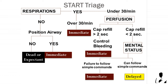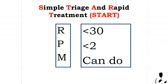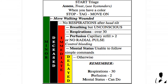Under Mental Status, if the patient fails to follow simple commands, the patient will be given a red tag. If the patient is able to follow simple commands, the patient will receive a yellow tag. Remember the mnemonic RPM: R — Respirations under 30 cycles per minute is normal; P — Pulse or Perfusion, less than 2 seconds capillary refill is normal; M — Mental Status, patient can follow simple commands is normal. A link will be provided in the description box to review the START triage algorithm.